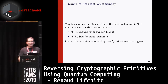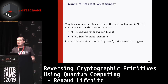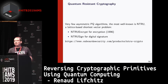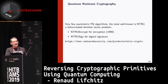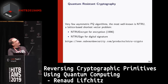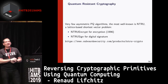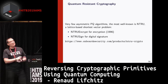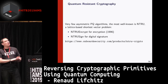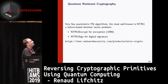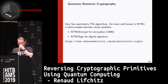There are very few post-quantum cryptography algorithms widely available. The most well-known is NTRU, a lattice-based cryptography algorithm. You can use NTRU Encrypt for asymmetric encryption and NTRU Steiner for digital signature.